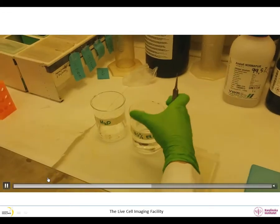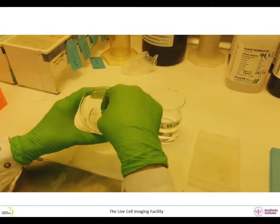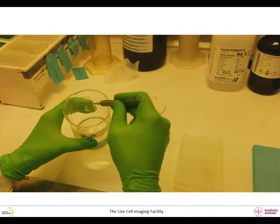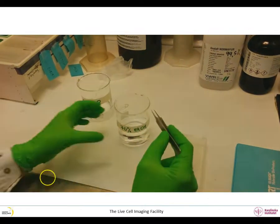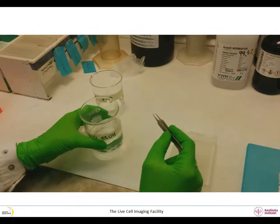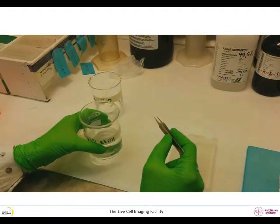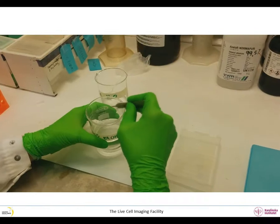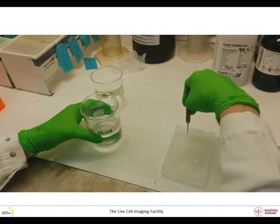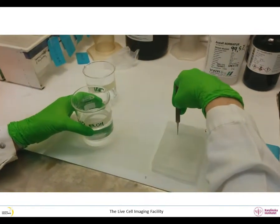To sterilize the cover slip, prepare a 70% solution of ethanol and transfer the cover slip into this solution. After a couple of minutes take them out and put them in a holder to dry. The cover slips are now ready to be used and the leftovers can be kept in a clean container.